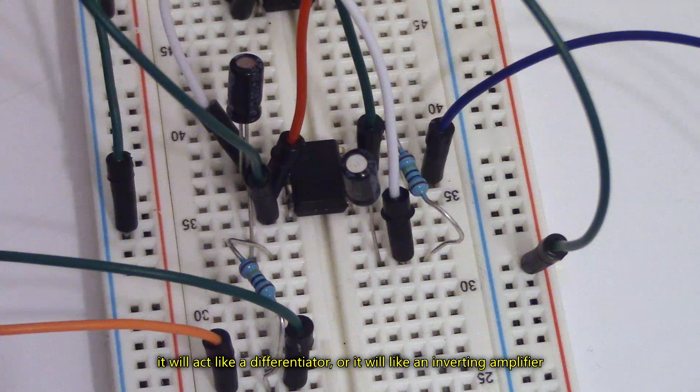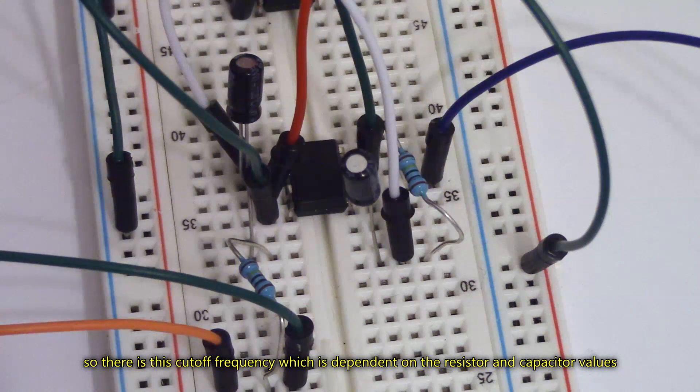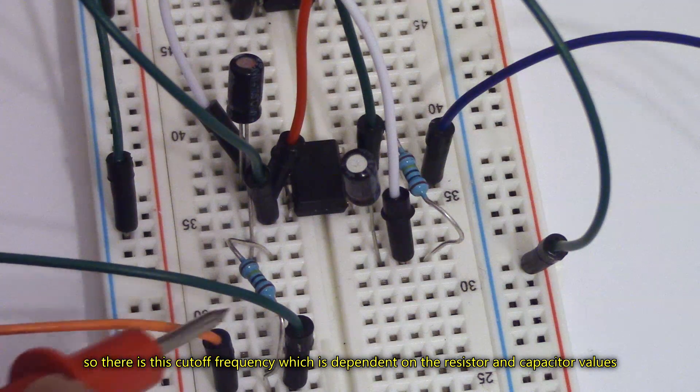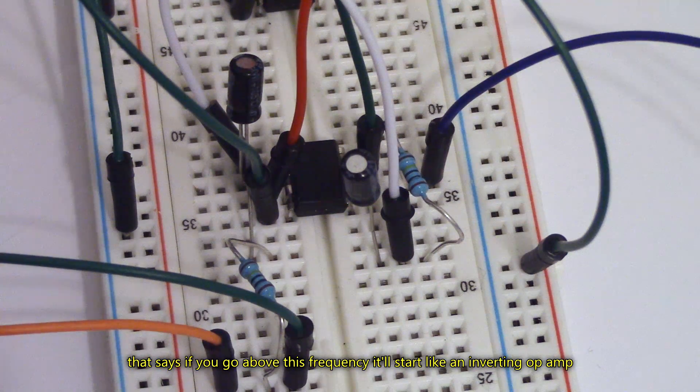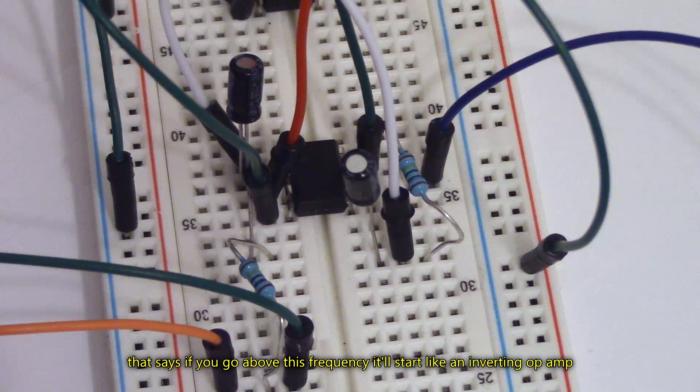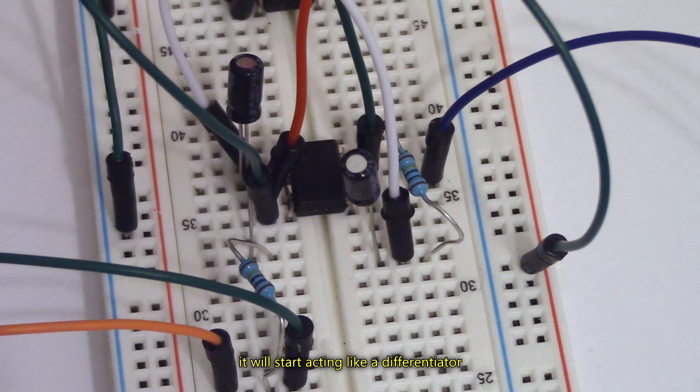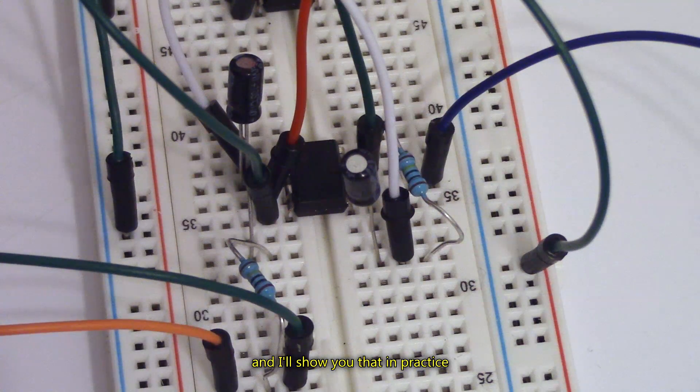It will act like a differentiator or it will act like an inverting amplifier. So there is this cutoff frequency, which is dependent on the resistor and capacitor values, that says if you go above this frequency, it will start acting like an inverting op-amp. However, if you're below this frequency, it will start acting like a differentiator. And I'll show you that in practice.